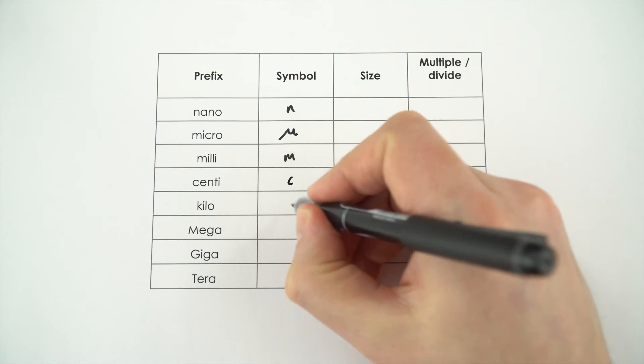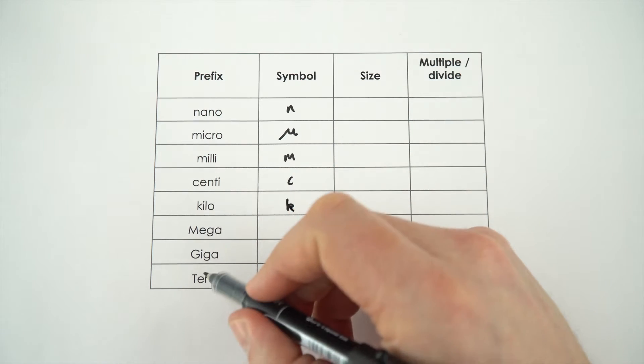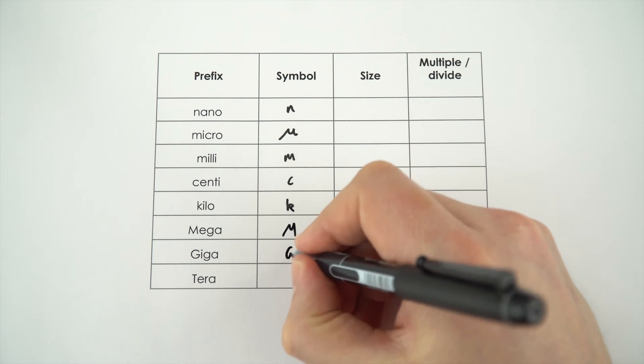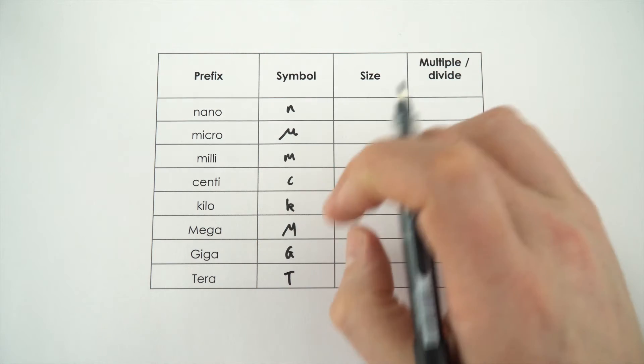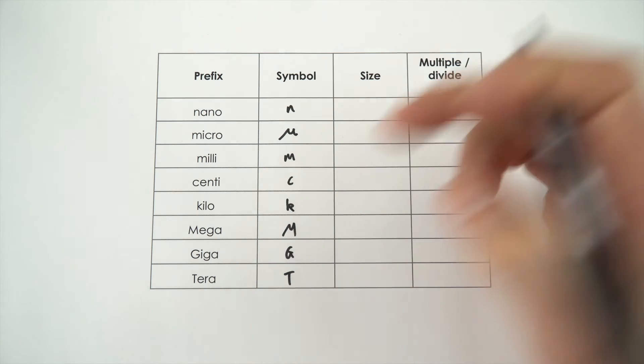And then we've got centi, kilo, and then we've got some of the big ones, so mega, giga, and terra. And it's often useful to think about maybe computer storage where a terabyte is bigger than a gigabyte, and so on.